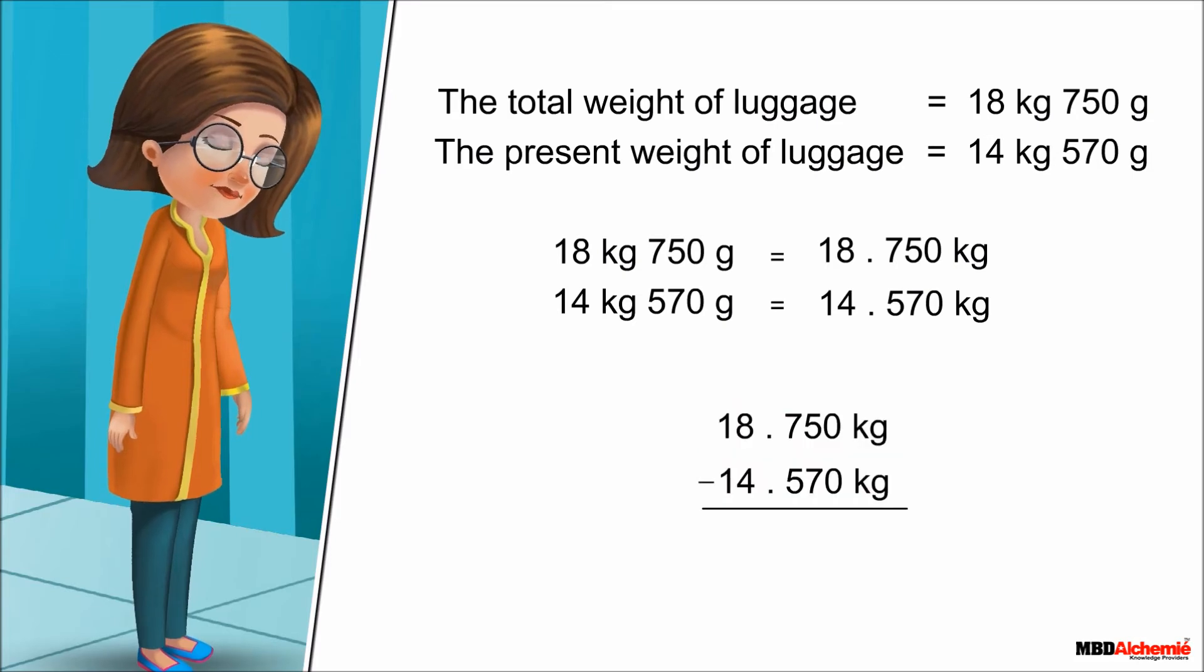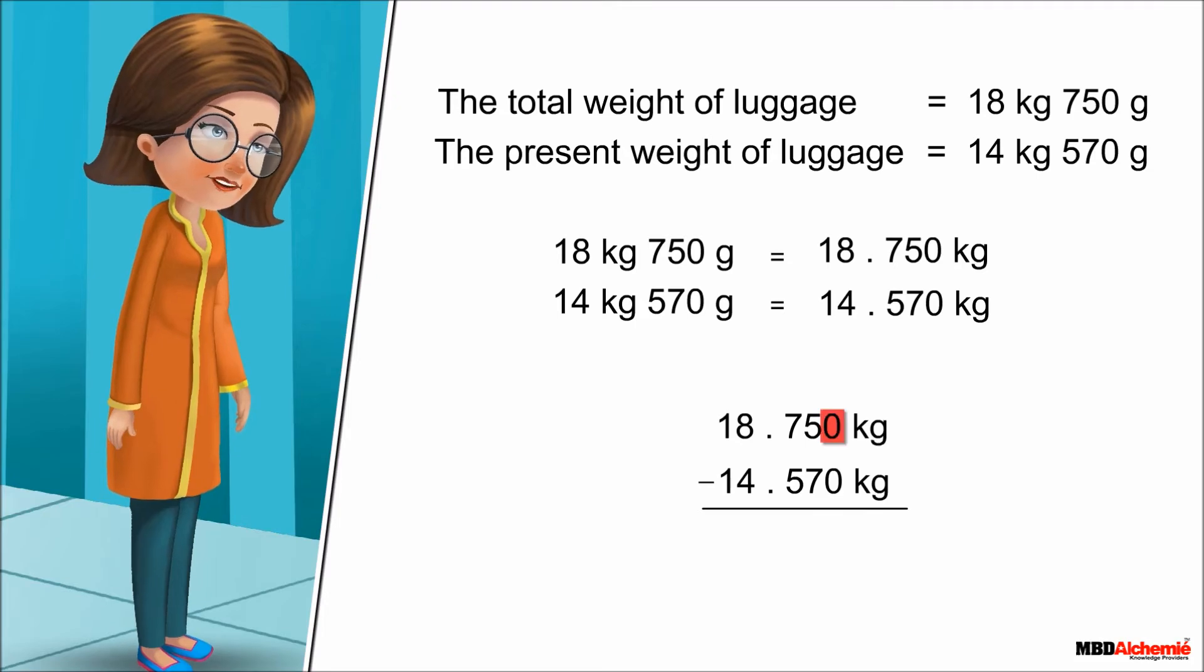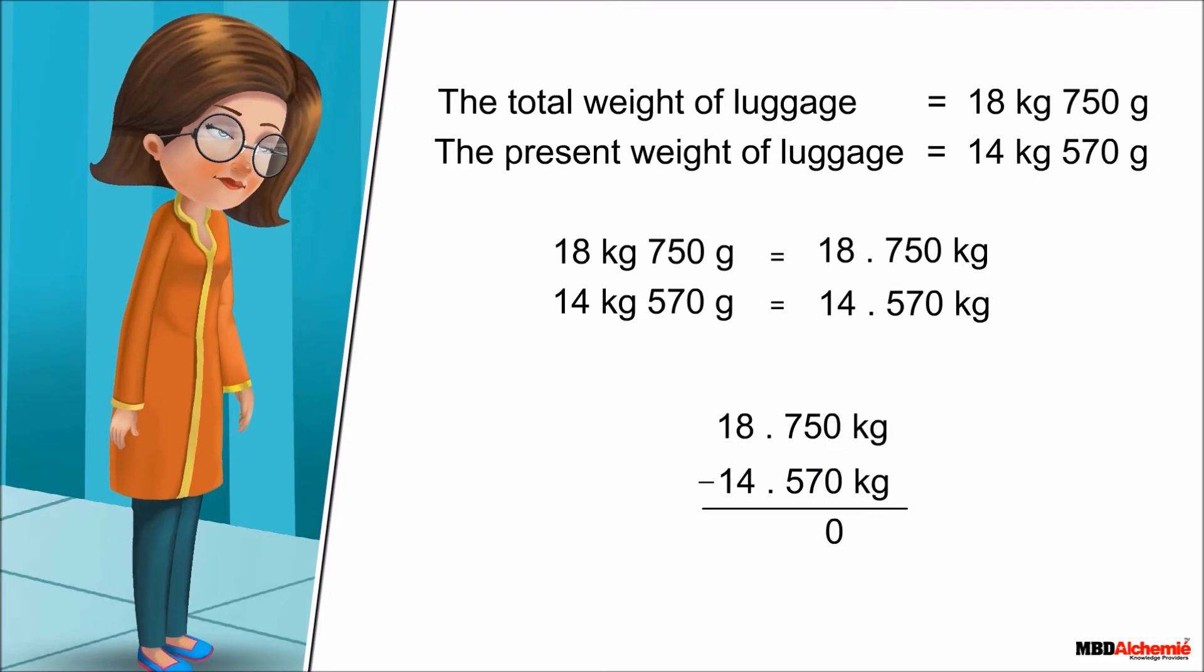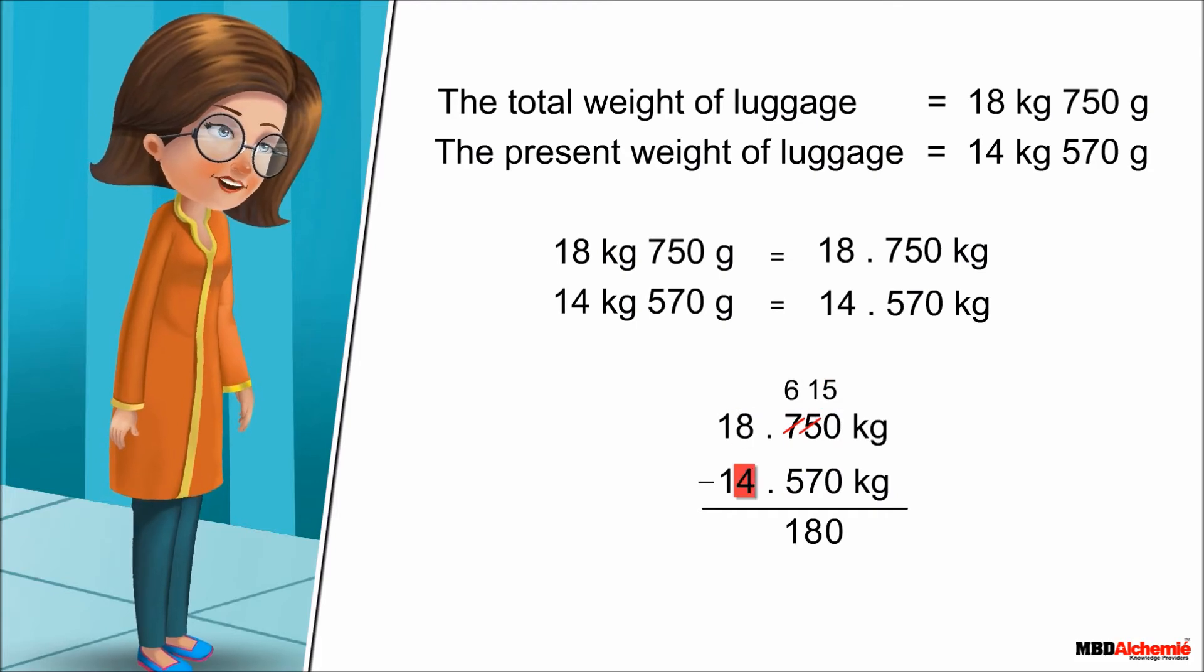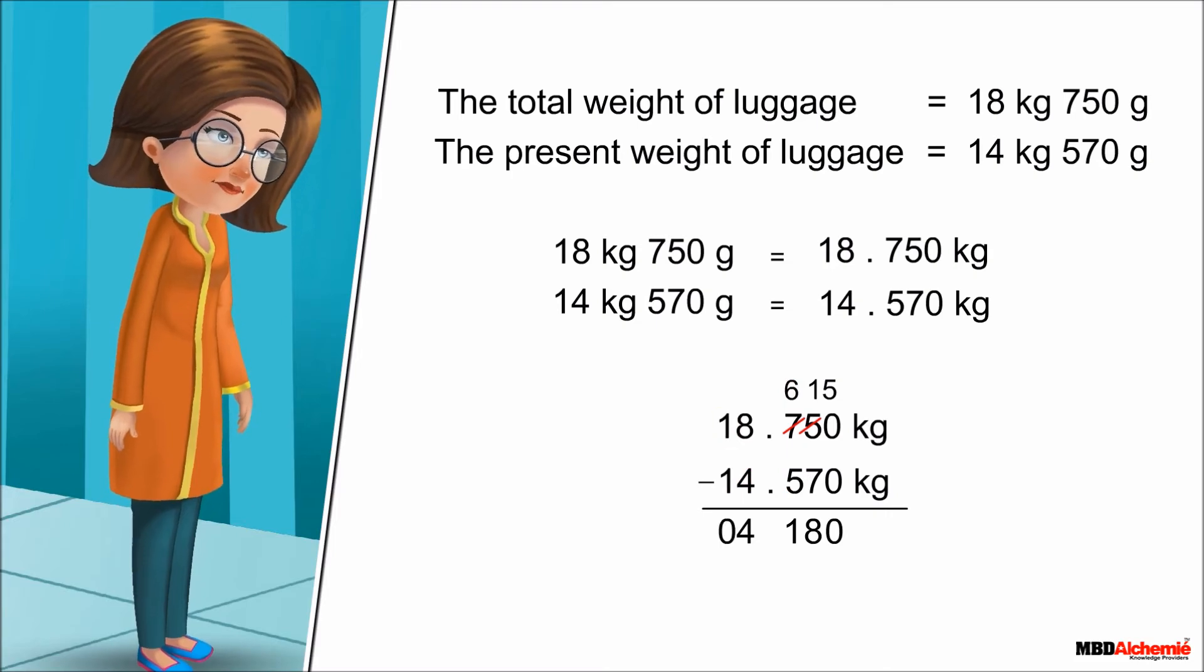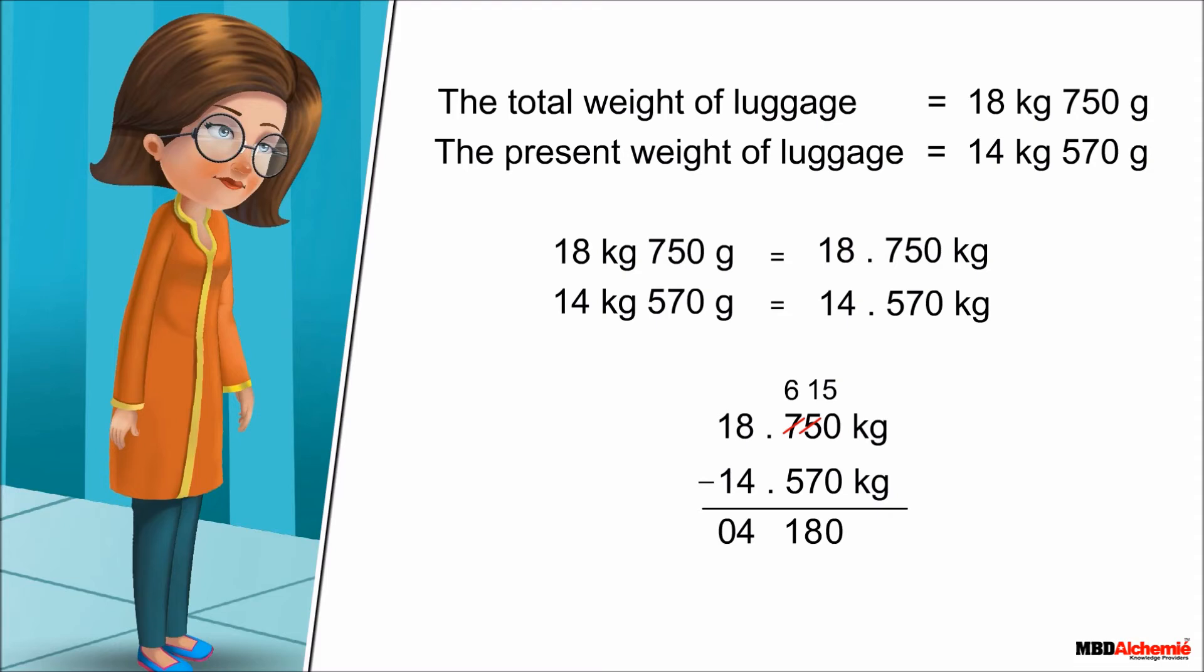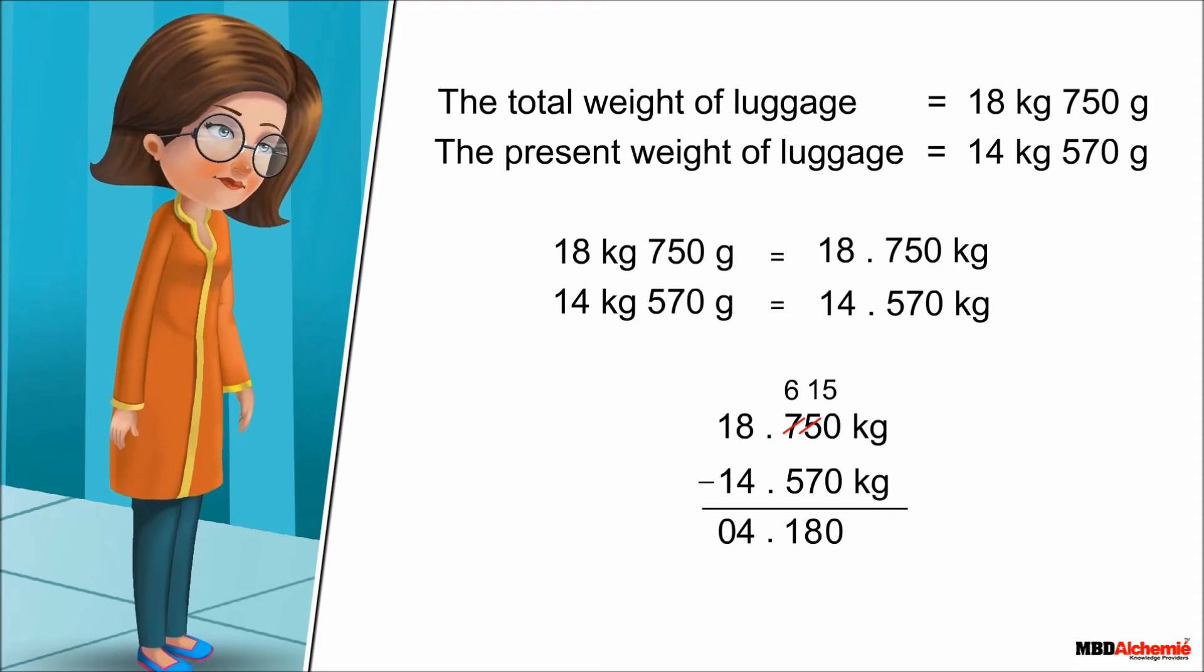So she subtracts the numbers as done in whole numbers as 0 minus 0 is 0. 15 minus 7 is 8. 6 minus 5 is 1. 8 minus 4 is 4. And 1 minus 1 is 0. So, the weight of objects which she needs to take out is equal to 4.180 kilograms.